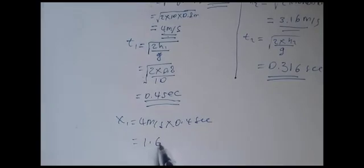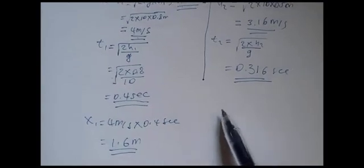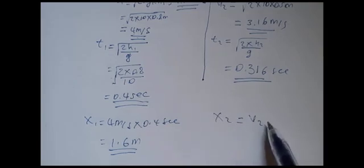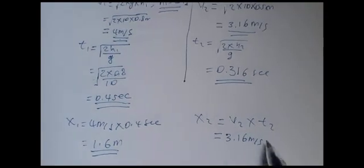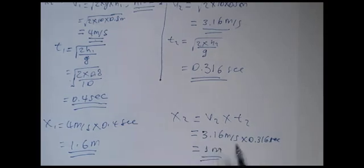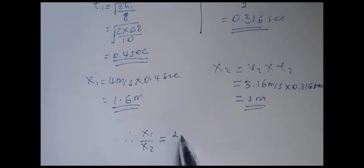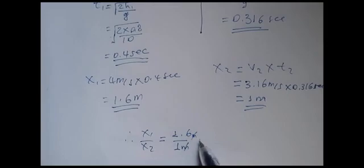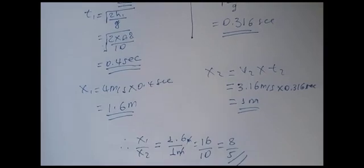x1 = v1 × t1 = 4 m/s × 0.4 s = 1.6 meters. x2 = v2 × t2 = 3.16 m/s × 0.316 s ≈ 1 meter. Therefore x1 / x2 = 1.6 / 1 = 8/5. Your final answer for the ratio is 8 over 5.